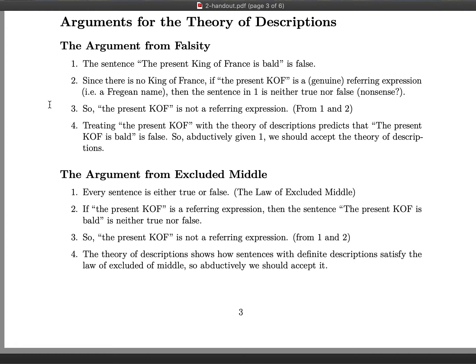To illustrate: consider the sentence 'Snow is white.' As a matter of logic, this sentence is either true or false — snow is white or it isn't. As it happens, it's true that snow is white. But what the law of excluded middle says is not possible is that this sentence or any other lacks a truth value. Every single claim we make has to be either true or false; there's no middle possibility between truth and falsity.